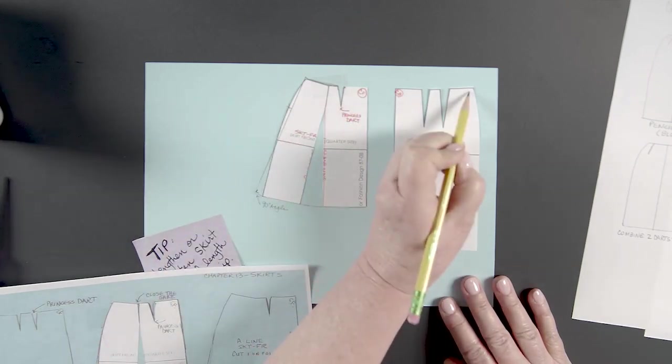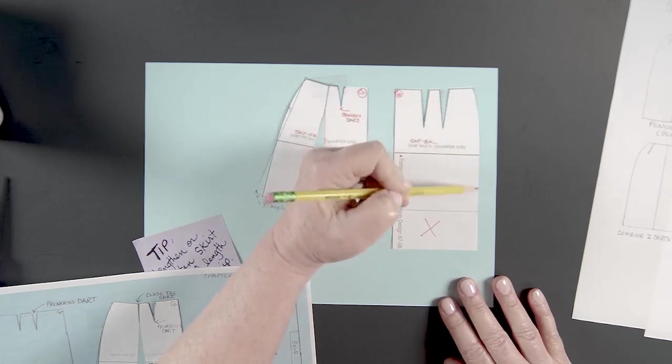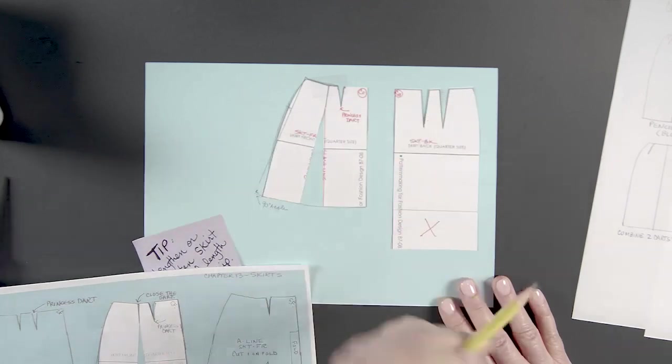Notice this one is turned in the other direction where center back is this straight line. Be sure you're marking this center back, not this, because this is the hip curve. This is the side seam.